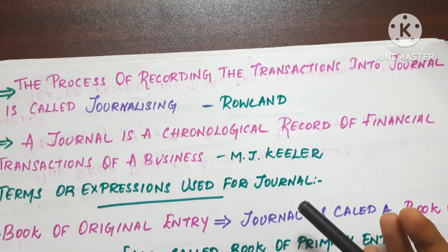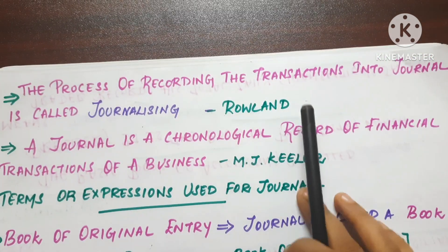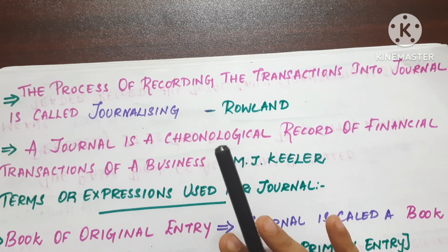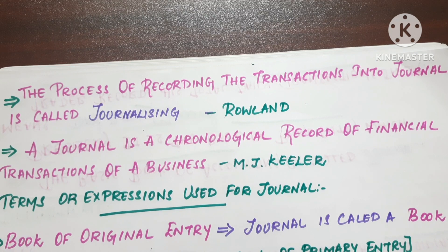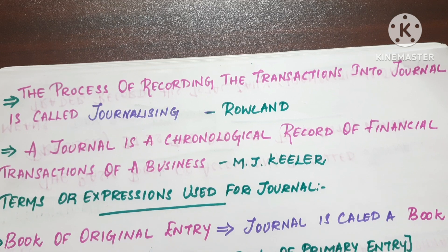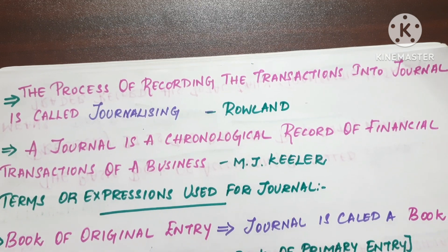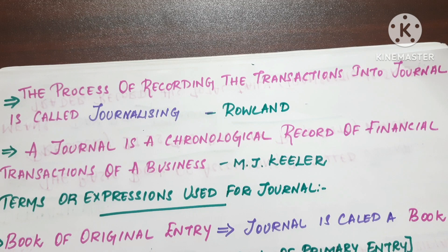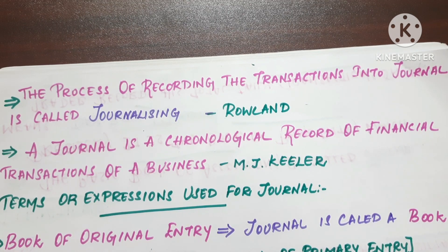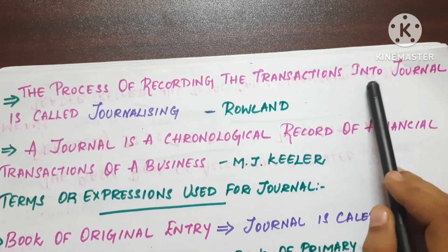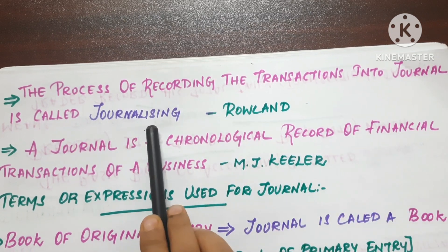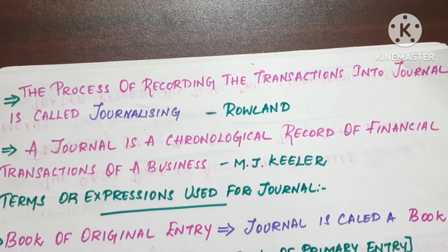The journal is the basic book of accounting and also the book of primary entry, meaning it is the day book. Traders record all daily transactions in it. These transactions are recorded in the journal — that process is called journalizing.